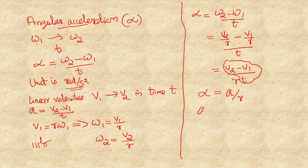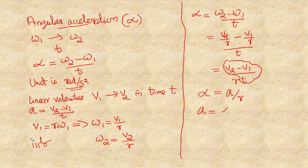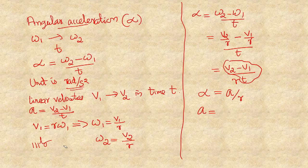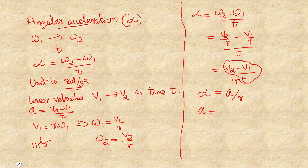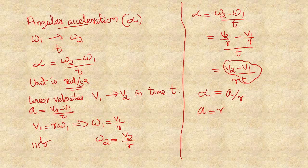So what is A? A is equal to R times alpha. This is the relation between linear acceleration and angular acceleration. We already have the relation between linear velocity and angular velocity: V equals R times omega. So to get the similarity between these two relations: linear quantity equals radius times the angular quantity, that is A equals R times alpha and V equals R times omega.